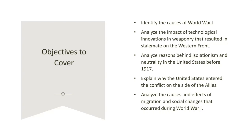Before 1917, the United States maintained a policy of isolationism and neutrality in world affairs. The American public, scarred by past conflicts like the Spanish-American War, which we covered last week, was wary of entangling alliances and foreign entanglements. President Woodrow Wilson, initially reluctant to involve the U.S. in European conflict, sought to preserve American neutrality while advocating for peace and diplomacy.